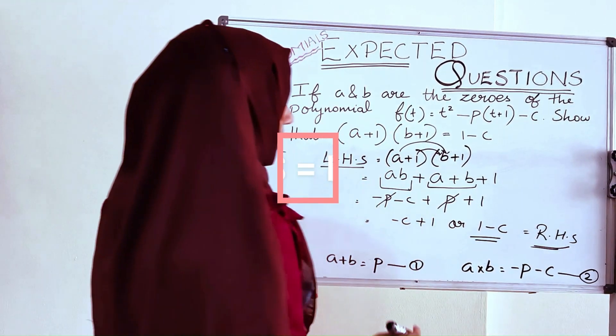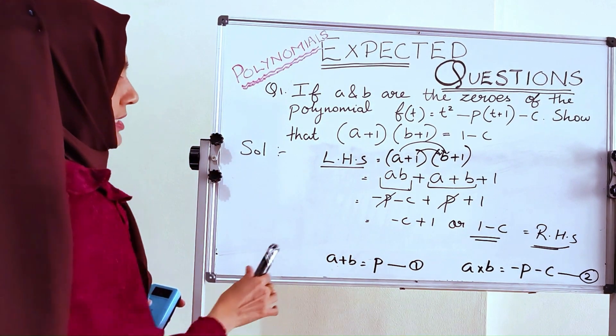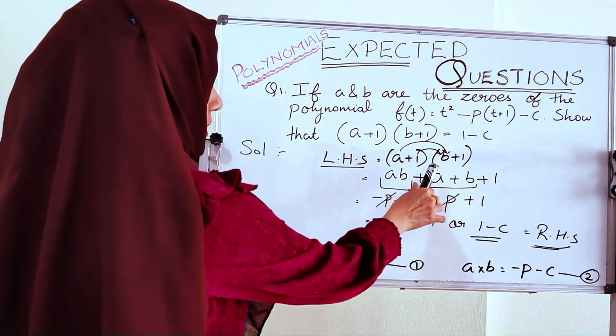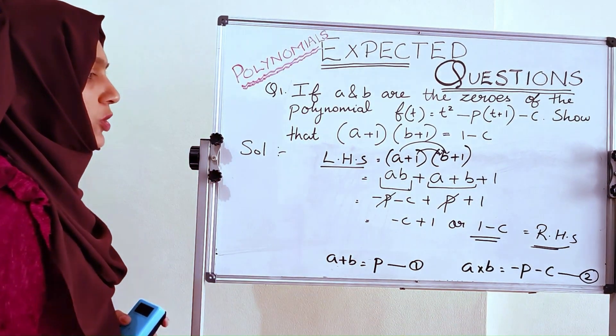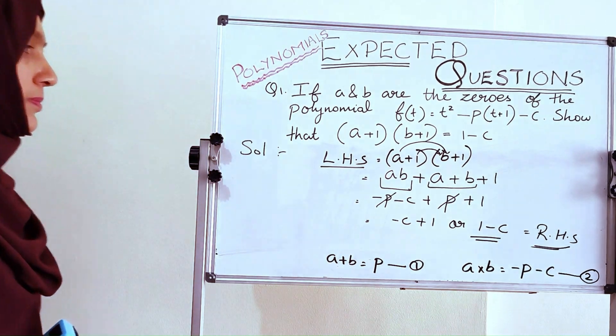So LHS = RHS. We have proved that (a + 1)(b + 1) = 1 − c.